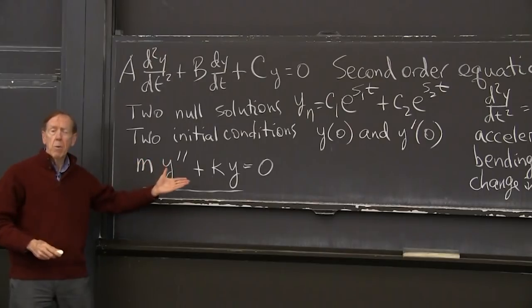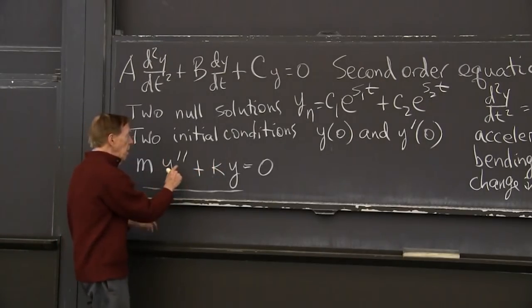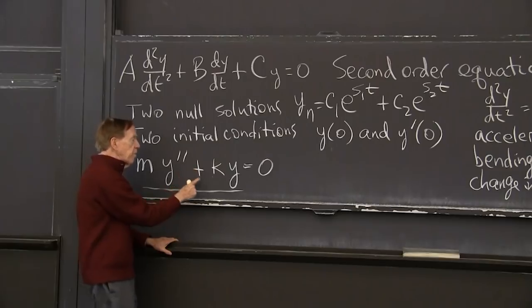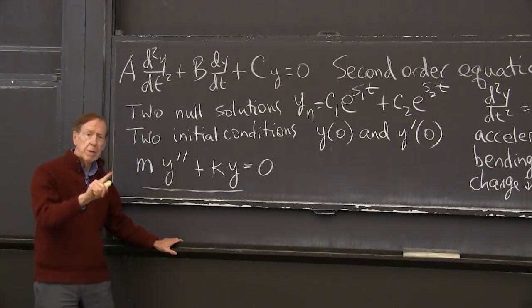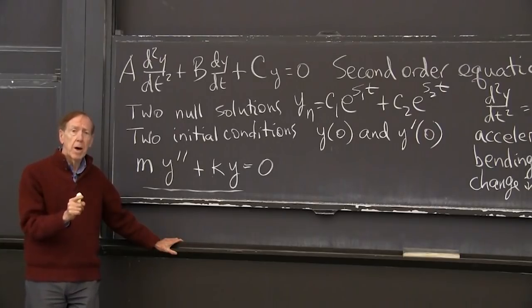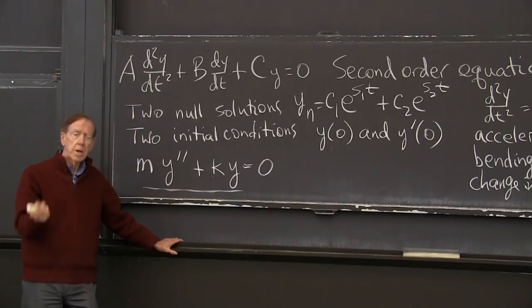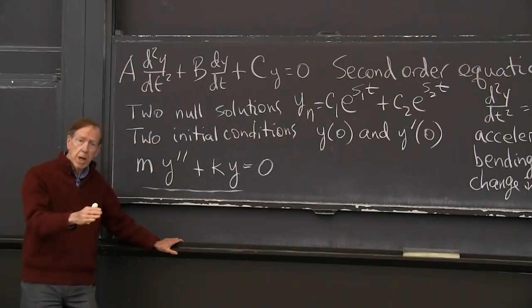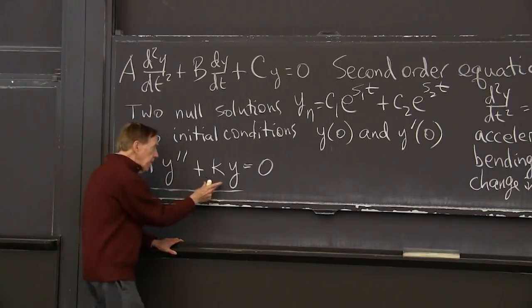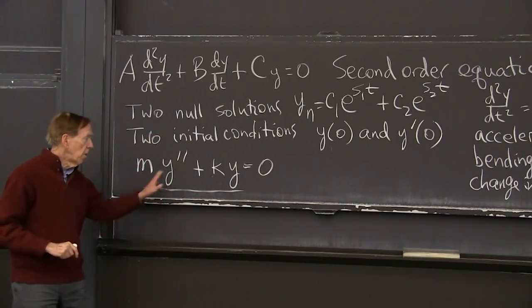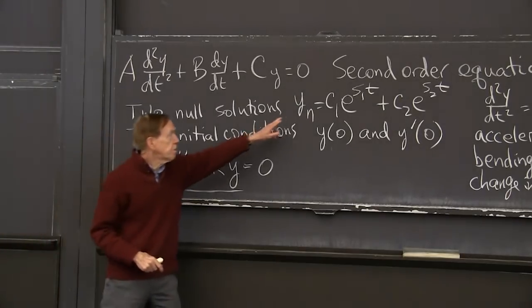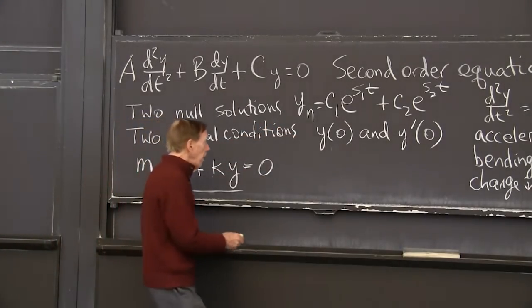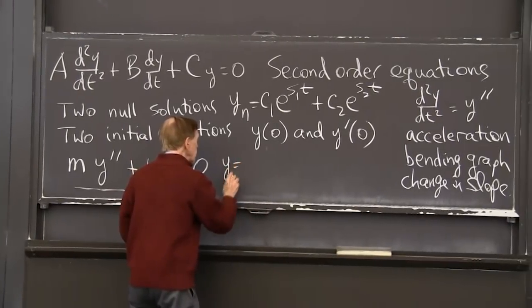So if m and k were 1, suppose m and k were 1, I'm looking for a second derivative plus the function is 0. The second derivative is minus the function. I immediately think of sine t and cosine t. Sines and cosines, because the second derivative, the first derivative of sine is cosine. The second derivative is minus the sine. It gives us the minus sign here, the plus sign there, 0.